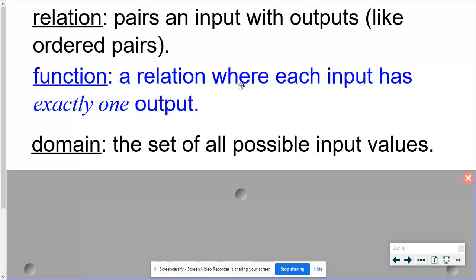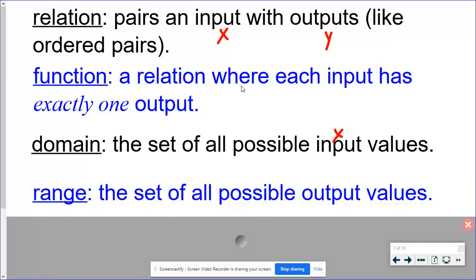The domain is just another name for all of the input values. Now the input values, if you go back up here, also the input values are the X's. So we're talking about all of the X's. When we're talking about the output values, that's going to be the Y's in our ordered pairs. So when I'm talking about the range, all of the output values, those are the Y's.